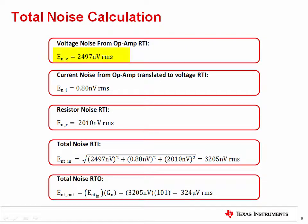So now that we have the op-amp voltage noise, the op-amp current noise translated to voltage, and the op-amp resistor noise, we can add them all together, again using the root sum of squares. This gives us the total input referred noise voltage in RMS. Notice that the current noise does not contribute significantly to the total noise. The OPA627 is a JFET input op-amp, which typically has very low input current noise density. In this example, the total input referred noise calculates out to 3,205 nanovolts RMS. Multiplying by the gain of 101, we get an output noise voltage of 324 microvolts RMS.